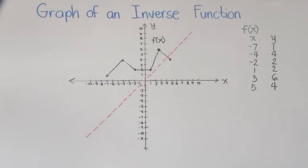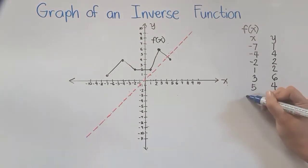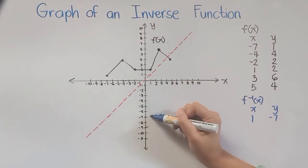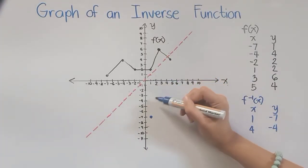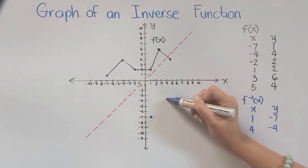Now to get our inverse function here or the graph of our inverse, we will simply interchange our coordinates. Starting with the first point, our x will now be 1 instead of negative 7, and our y here will be negative 7 instead of 1. That would be this point. Another one is positive 4, negative 4. So this is this point.